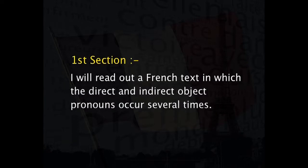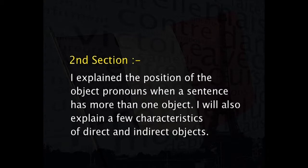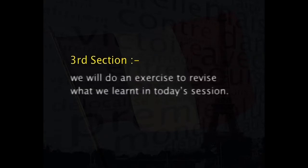Today's lesson has been divided into three sections. In the first section, I will read out a French text in which the direct and indirect object pronouns occur several times. Then, in the next section, I will explain the position of these object pronouns when a sentence has more than one object, and also explain a few characteristics of direct and indirect objects. And finally, in the third section, we will do an exercise to revise what we learned in today's session.